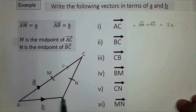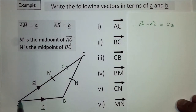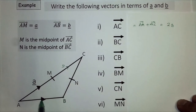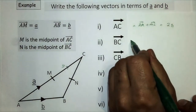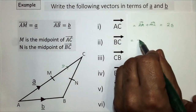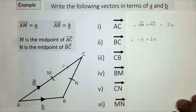To go from B to C, because we don't know that vector directly, I follow the path going from B - that will be minus b, going in the opposite direction to vector b - and then plus 2a. So BC is equal to minus b plus 2a.